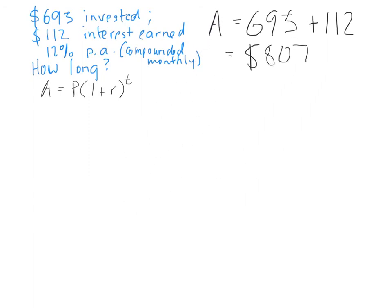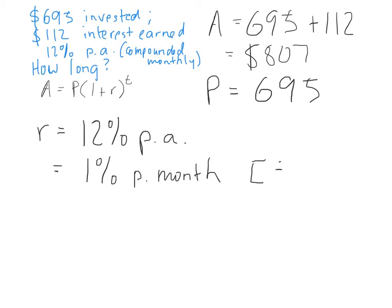So that's $807. What else do we know? We know the principle. That's $695, so that's cool. Now, the rate we probably need to spend a little bit more time on. The rate, we know, is 12% per annum, but the story doesn't end there. Now, what do we need to do to the rate in order for it to be compatible with our problem? Getting a few right answers there. Dividing by 12. So, 12% per annum is 1% per month. And I did that by dividing by 12.